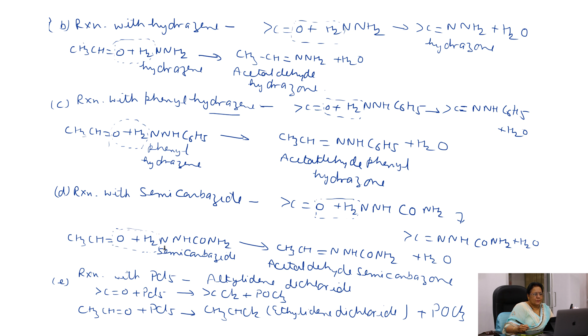The next reaction is with phosphorus pentachloride: ethylidene dichloride is obtained. The oxygen atom of the carbonyl group is replaced by 2 Cl atoms. In acetaldehyde, 1 O is replaced by 2 Cl, and we get ethylidene dichloride. If you like this video, please like, share, and comment. For videos on any specific topic of chemistry, please comment below. For more articles on chemistry, please visit our site chemistryonline.guru. Thank you.